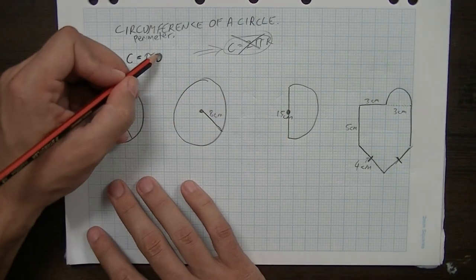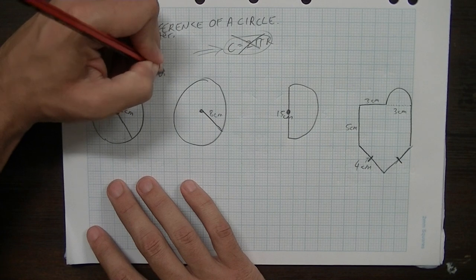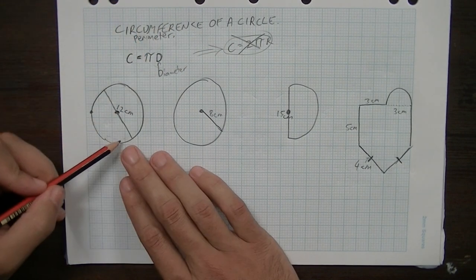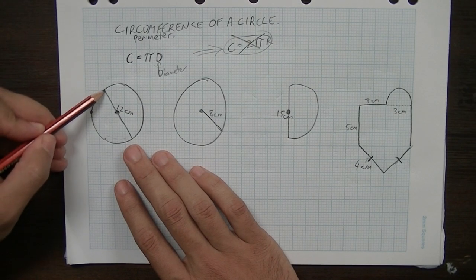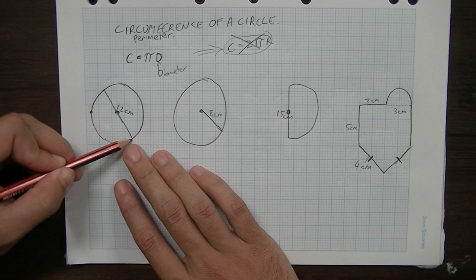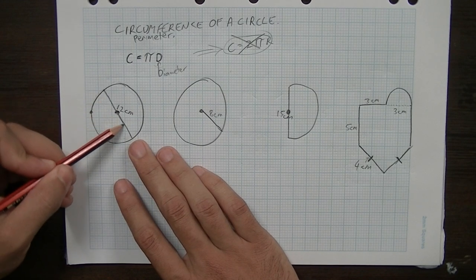Okay, so remember the d stands for diameter here. And diameter is simply the distance from one edge through the centre to the other edge. So it's all the way across the circle.